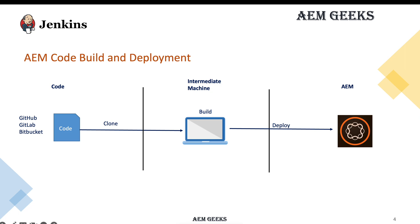The intermediate machine and AEM can be on the same machine as well — I'm just referencing them as separate to help understand. So every time you perform these tasks, let's say you have a big team with developers from different domains. Whenever they push some code to your repository, every time you have to build and deploy. Managing this process throughout the development cycle is a very complex task.